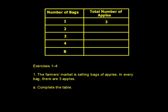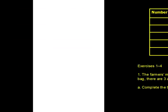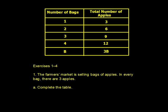Opening exercise, number one: the farmer's market is selling bags of apples. In every bag there are three apples. Letter A, complete the table. Pause the video, complete the table, and come back when you're ready. Here's a completed table — the total number of apples column is 3, 6, 9, 12, and then the last one is the expression 3B.